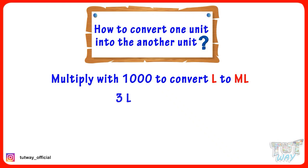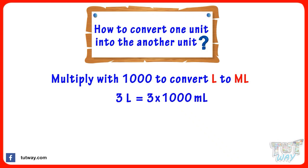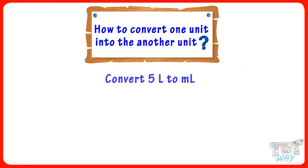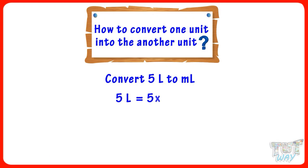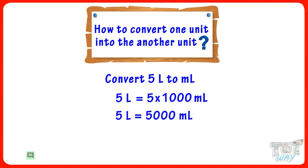3 liters equals 3 multiplied by 1000 milliliters, so 3 liters equals 3000 milliliters. 5 liters is equal to how many milliliters? 5 liters equals 5 multiplied by 1000, which equals 5000 milliliters.